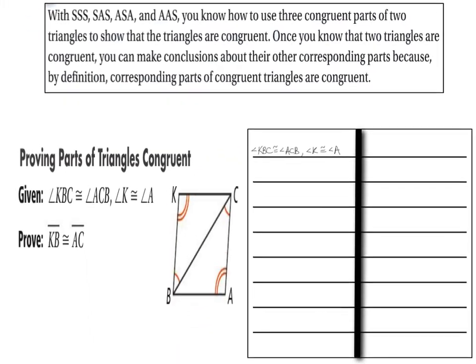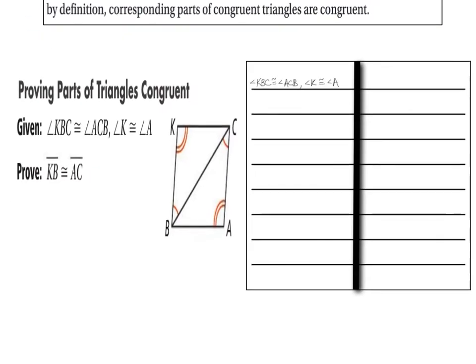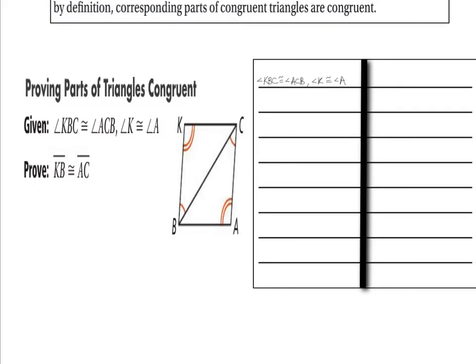Let's start diving into some of these proofs. You'll notice that these proofs are slightly different. On these proofs, you're given angle KBC — which is this angle right here — is congruent to angle ACB, right there. And angle K and angle A are congruent. This time it wants you to prove that KB and AC are congruent to each other — this segment and this segment are congruent. No longer do you see that the triangles are going to be proven congruent, but that's the first thing we have to do: prove the two triangles are congruent. Then we can say the sides are congruent by CPCTC.